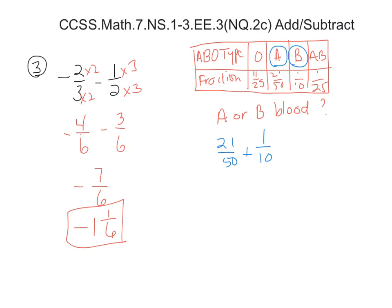To do that, the common denominator would be 50. That would be 21 over 50, and this would be multiplied times 5, giving you 5 over 50. There are no negatives, so you don't need the negative rules. It would be 26 over 50 for either A or B. But that is not simplified because we can take a 2 out of the numerator and 2 out of the denominator. So we get 13 over 25.